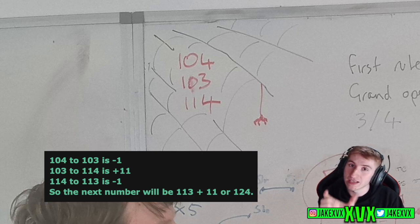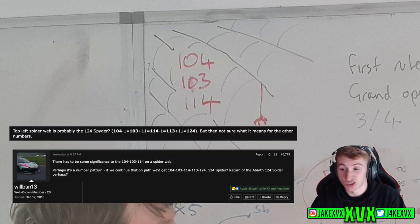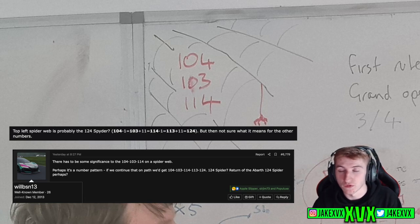Now they've come up with that because if you take the three numbers 104, 103 and 114, if you make a sequence out of that and then extend it by one more you get the number 124 which could very well mean the Abarth 124 spider is returning to Horizon 5.